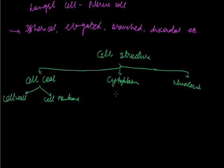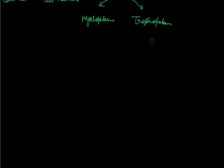Now cytoplasm is also divided into two parts. First one is hyaloplasm while the second one is trophoplasm. Hyaloplasm means cytoplasm without cell organelles, while the trophoplasm includes all the cell organelles in cytoplasm.